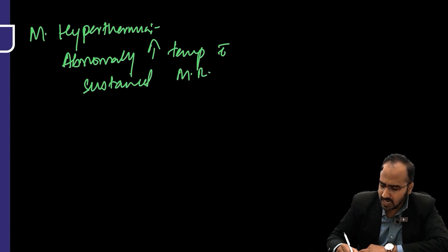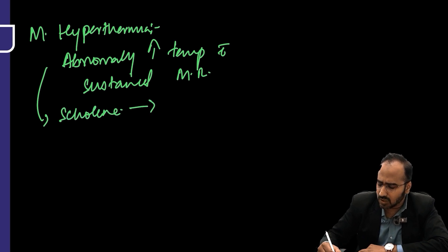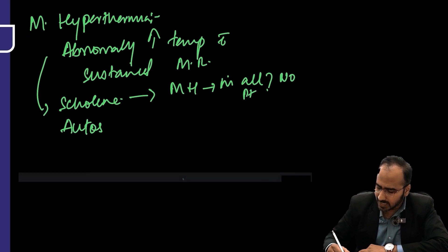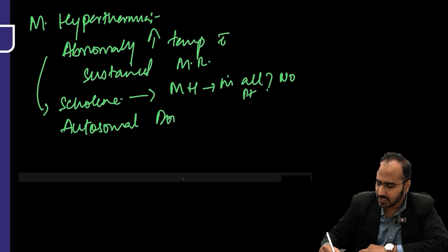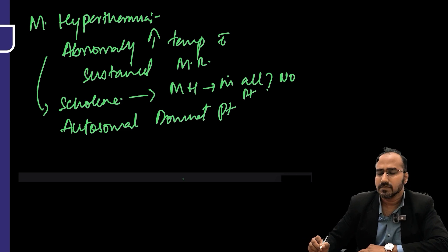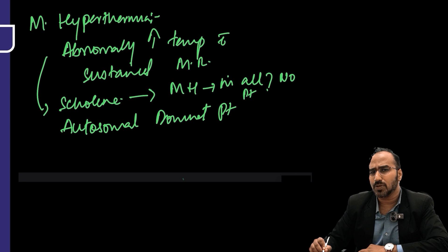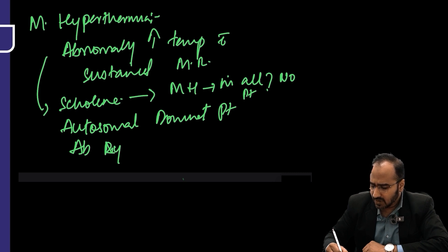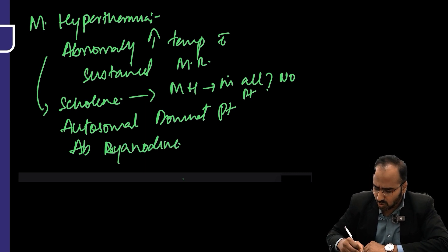Does suxamethonium cause malignant hyperthermia in all patients? No — suxamethonium will cause malignant hyperthermia only in autosomal dominant patients. Whenever you give suxamethonium to such a patient, these patients have an abnormal ryanodine receptor.